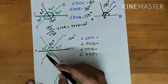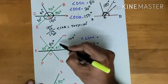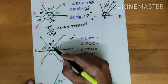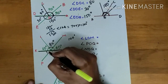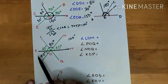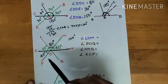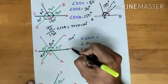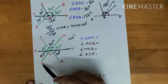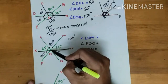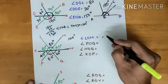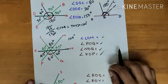We can easily find the remaining three angles using opposite angles. The opposite angle to MON is KOP, so KOP is also 40 degrees. The opposite angle to KOL is NOQ, so NOQ is also 60 degrees. And the opposite angle to LOM is POQ, so POQ must be 80 degrees.